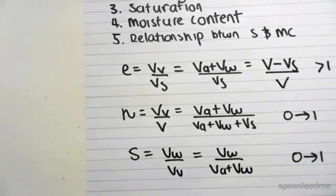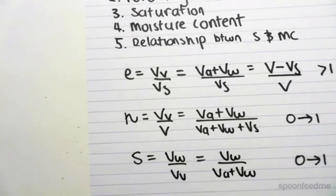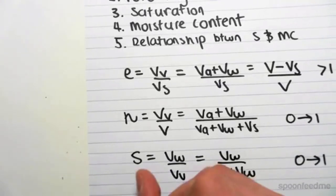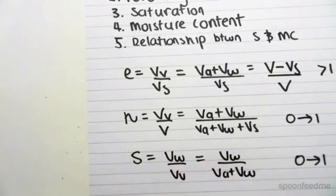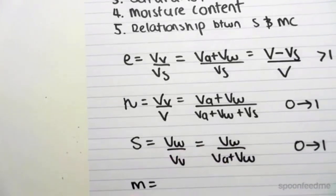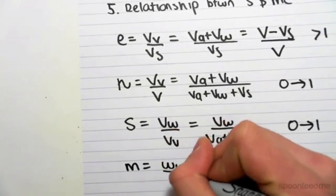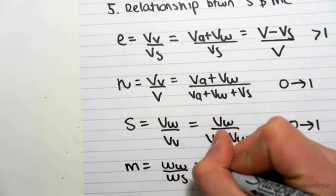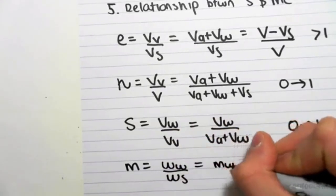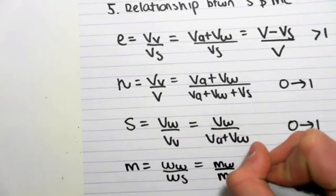And the next thing we're going to be looking at is the moisture content. So the moisture content is given by little M. This should not be confused with mass. In soil mechanics, little M is moisture content, which is the weight of the water over the weight of the solids, or the mass of the water over the mass of the solids.